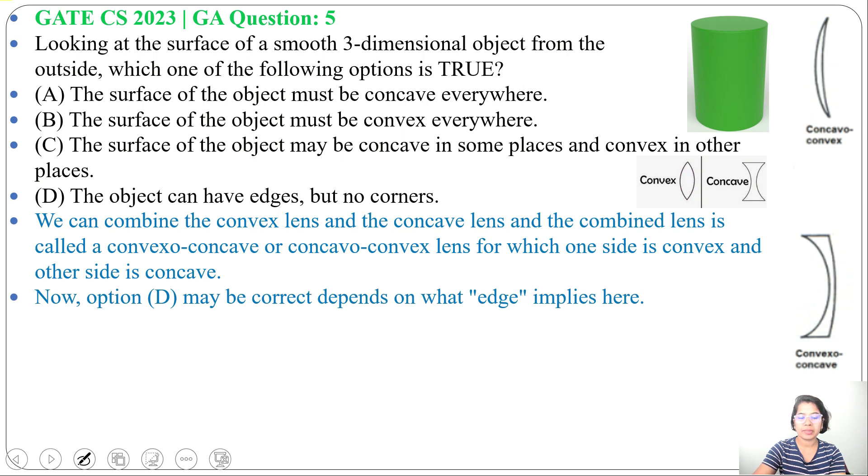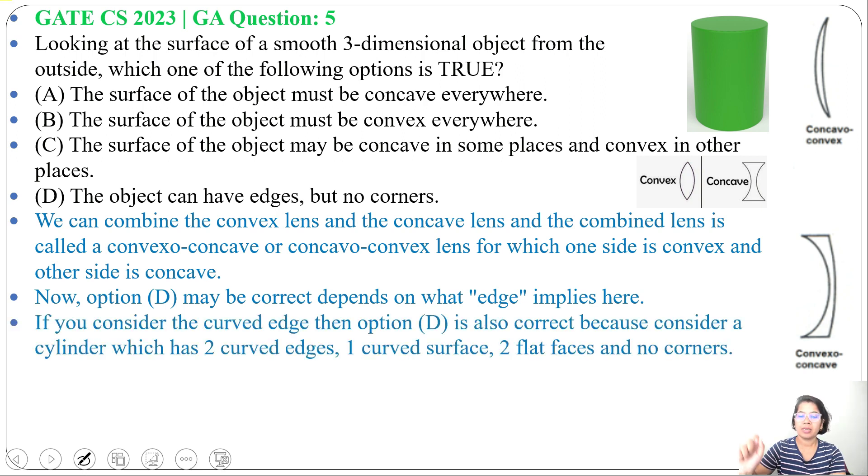Option D: the object can have edges but no corners. In this example, there are edges but no corners. There are two curved edges at top and bottom, one curved surface and two flat surfaces, top and bottom, but there are no corners.